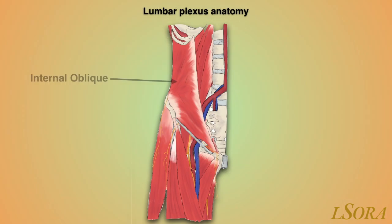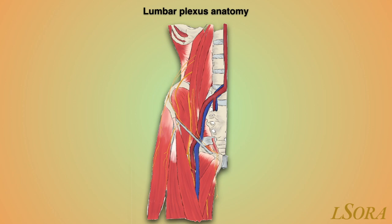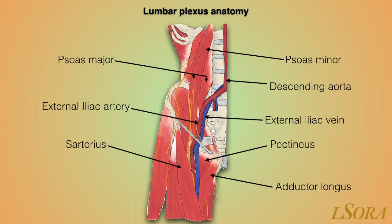Here we will cover lumbar plexus anatomy in a little bit more detail. In this schematic you can see the internal oblique muscle, with the other abdominal musculature being removed already. Deep to internal oblique you see psoas major and psoas minor, the iliacus muscle which is on the internal surface of the ilium, sartorius, pectineus, and adductor longus. You can also visualise the descending aorta as it comes down to form the external iliac artery and the external iliac vein lying medial to it.